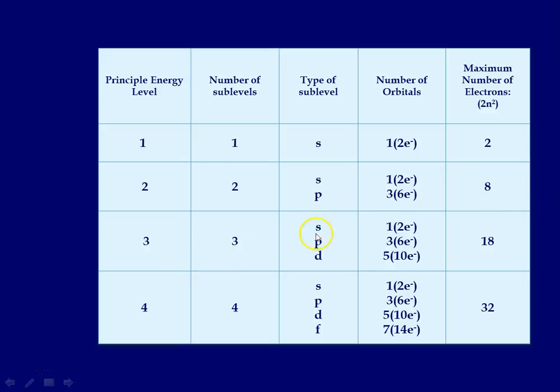At the third level with s, p, and d sublevels, you could hold a total of 18. And at the fourth principal energy level with sublevels s, p, d, and f, you could have a total of 32 electrons.